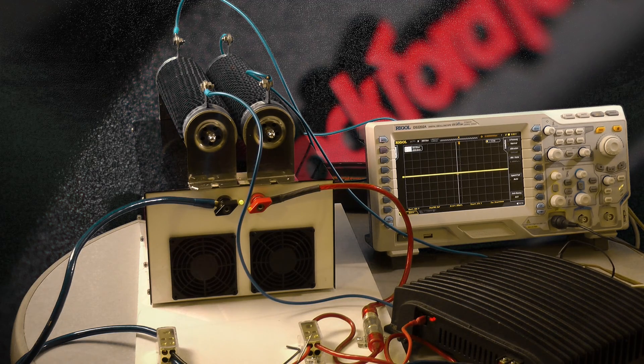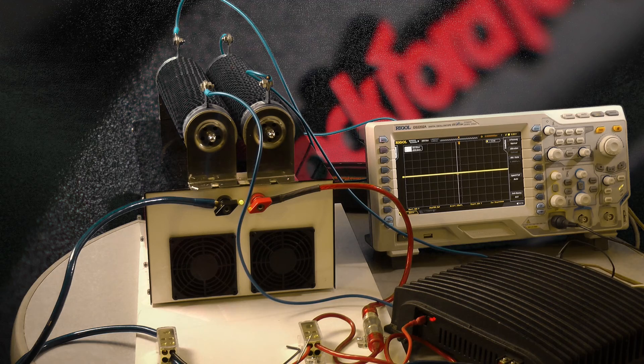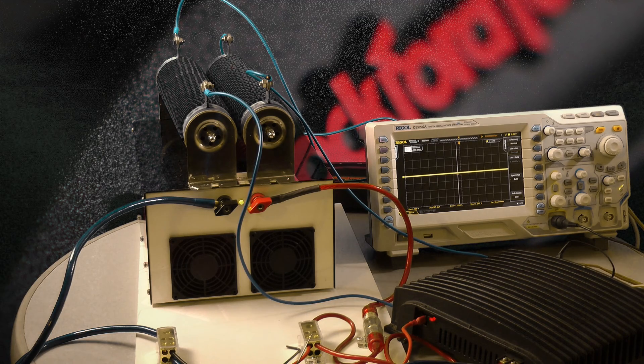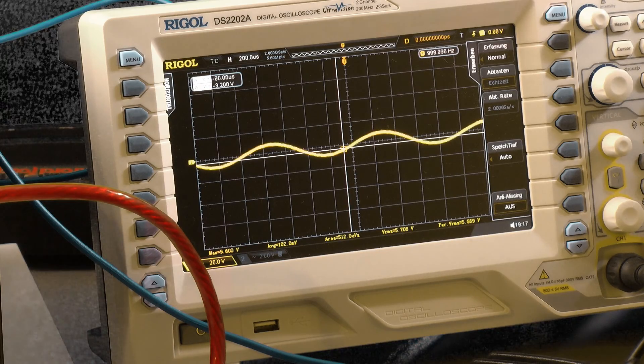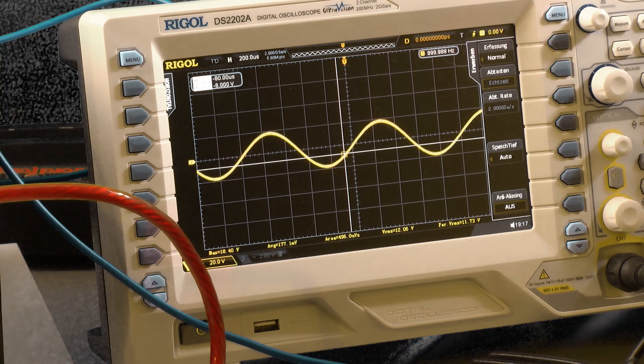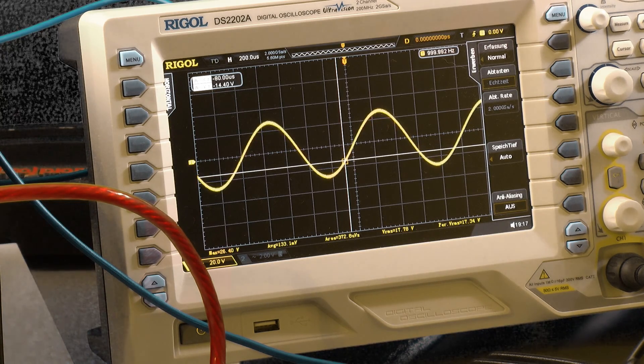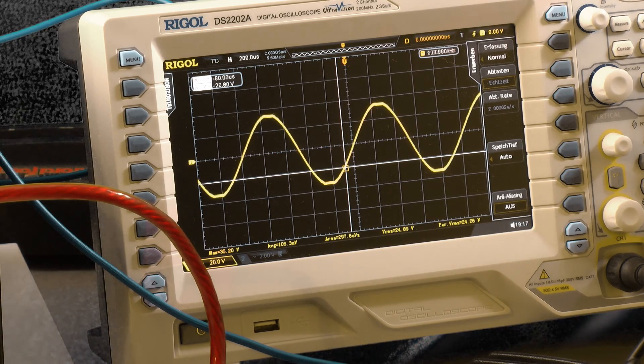Now I just connected two resistors in series with one ohm each. So we have two ohms per channel and I start with a continuous power test. Oops we get clipping. I reduce.